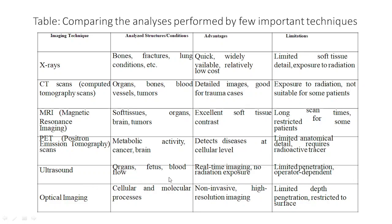Ultrasound is used for imaging organs, fetal development, and blood flow — for example, when a woman is pregnant. Advantages include real-time imaging and no radiation exposure. Limitations include limited penetration depth and being operator-dependent. Optical imaging is used for cellular and molecular processes. Advantages include being non-invasive and providing high-resolution imaging without patient contact or surgery required.